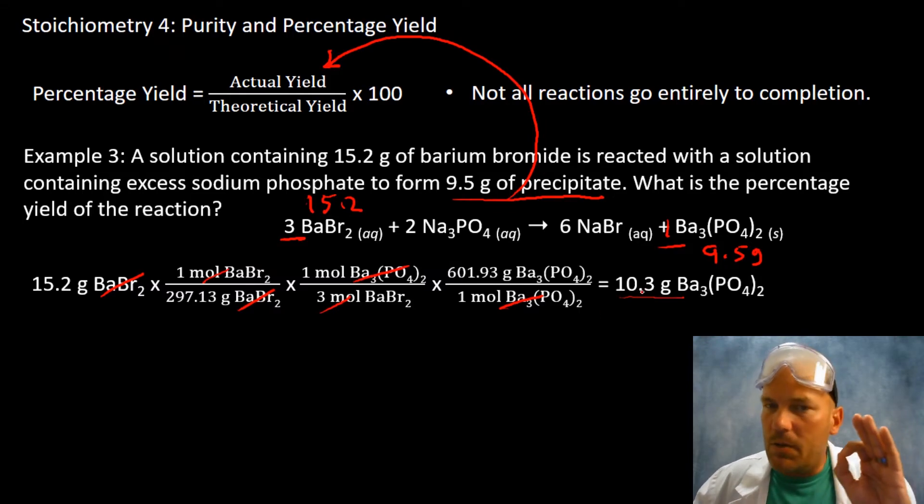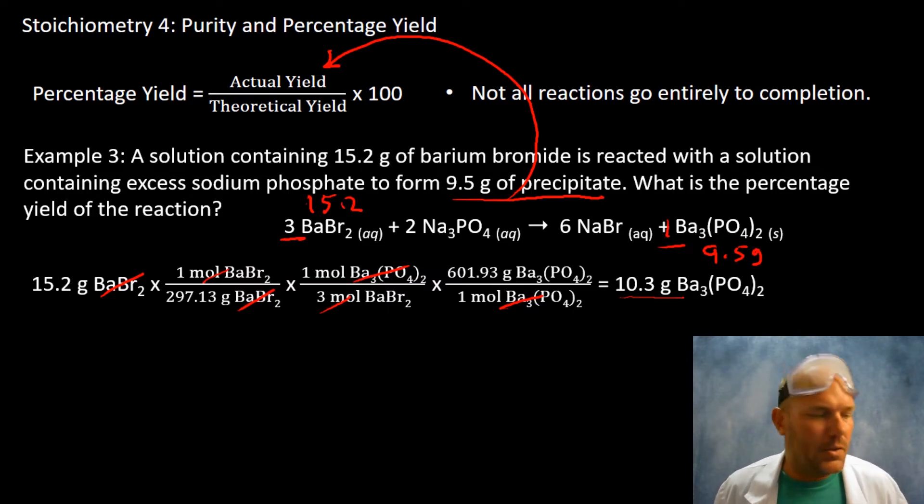So stoichiometry, I just want to make sure that's clear, is being used. So in theory, if the reaction goes to completion and there are no side reactions, no impurities, all of that good stuff, we should produce 10.3 grams of barium phosphate.